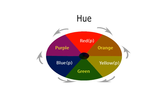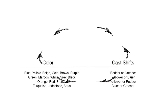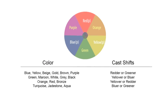The next dimension of color that you would need to adjust is the hue, which is basically the color itself. When dealing with automotive paints, you'll generally come across the terms redder, greener, yellower, or bluer when dealing with variants. What they're referring to is the cast shift, which is the undertone or secondary color of the original color that you're working on.